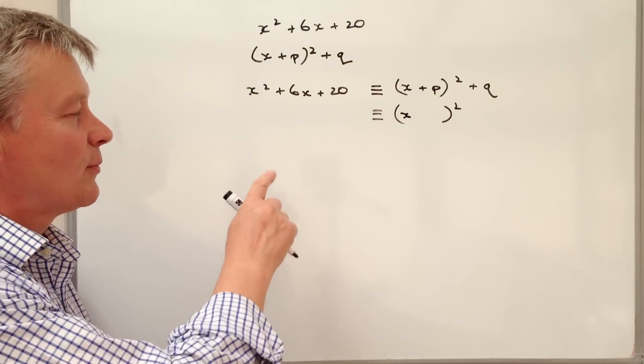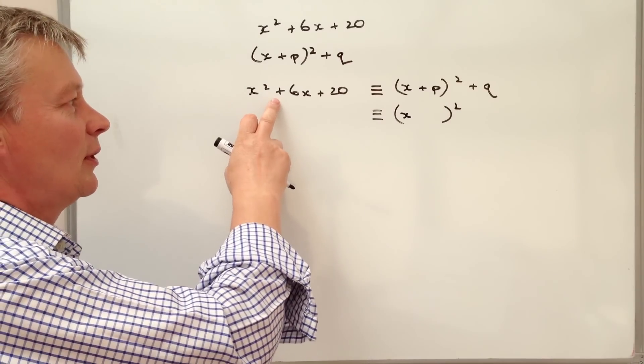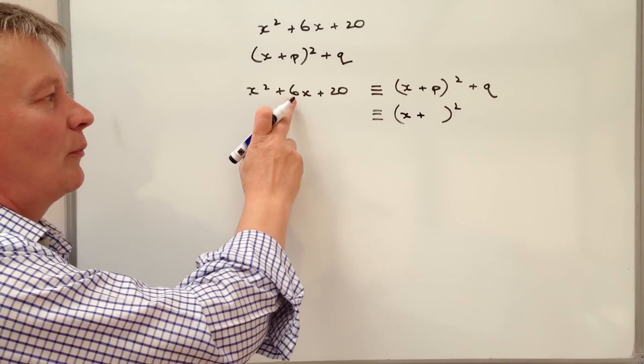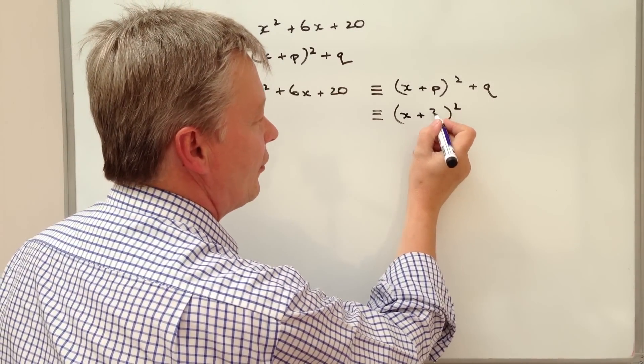The next thing that we do is we look at the next term and we halve it. So firstly we look at the sign and it's positive and then we look at 6x and we halve that and we write that as 3.